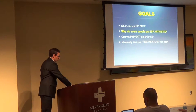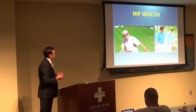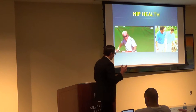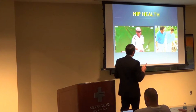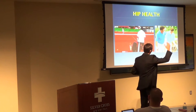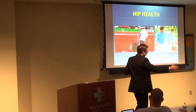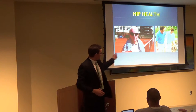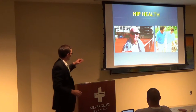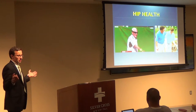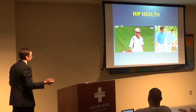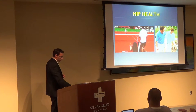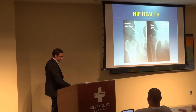Question number two, which we've alluded to the answer already, is: why will some people get arthritis — like this gentleman on your right using a walker, he's got a lot of hip pain — and this guy, who I found on YouTube, is 97 and he's playing tennis like nothing ever happened. He's got no problems whatsoever. So what is the difference?